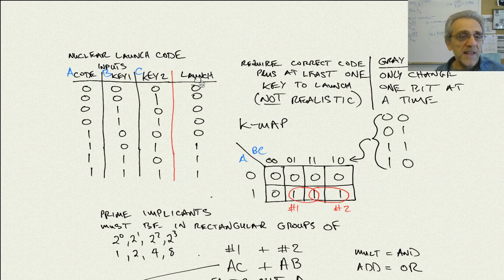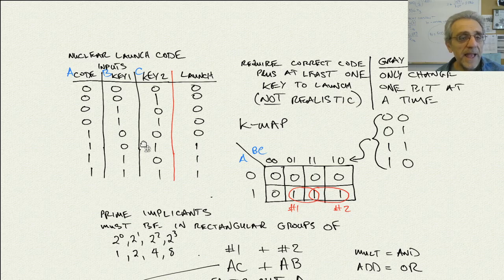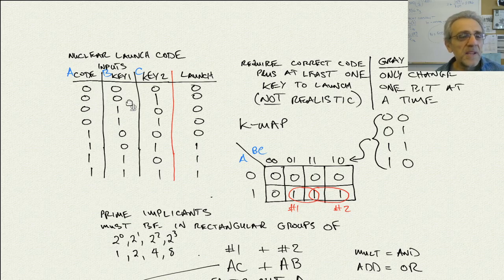Notice that on the launch side of the truth table, which is the output, we're only ever going to get a launch happening if the codes are correct and one of the two people turns their key. If the codes are wrong, it doesn't matter — even if both persons turn their keys, we're still not going to launch, as you can see it's a zero.